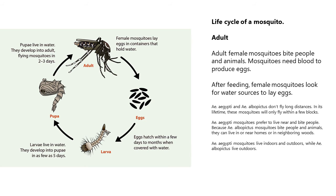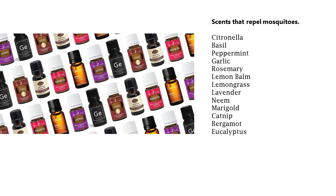Aedes aegypti and Aedes albopictus don't fly long distances — in their lifetimes, these mosquitoes will only fly within a few blocks. A. aegypti mosquitoes prefer to live near and bite people. Because A. albopictus mosquitoes bite people and animals, they can live in or near homes or in neighboring woods. A. aegypti mosquitoes live indoors and outdoors, while A. albopictus live outdoors.